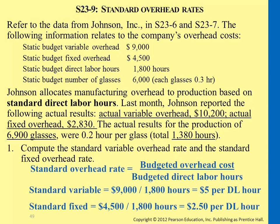If we want to get variable spending variances, we are comparing which two numbers? We're comparing using $10,200 — that's the actual cost — and we should compare that against the standard rate of $5 times the actual number of hours used, which would be 1,380 hours. This together is what we're trying to compare against the standard.